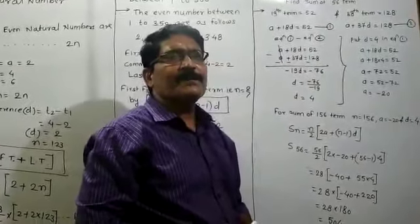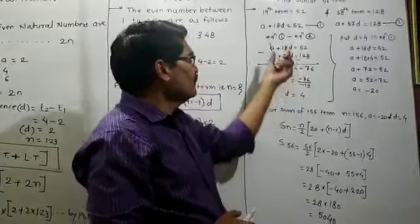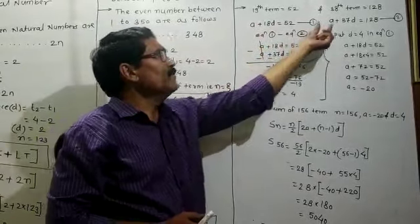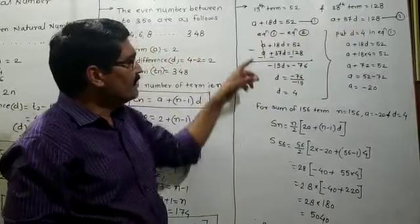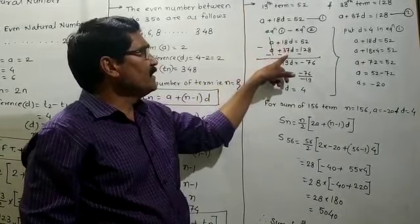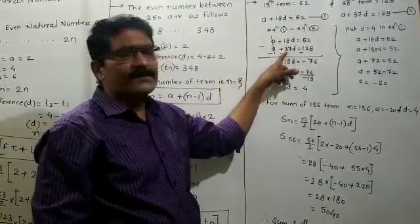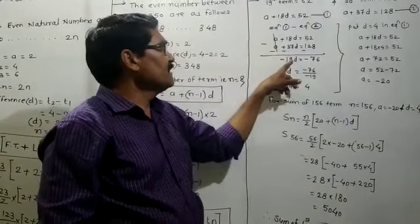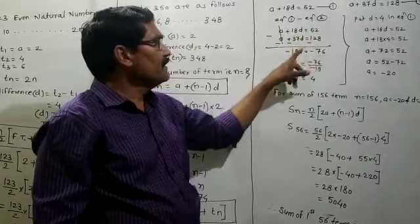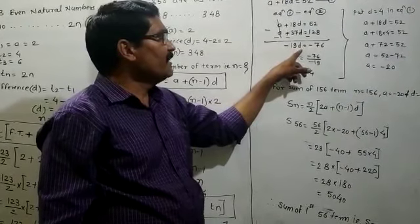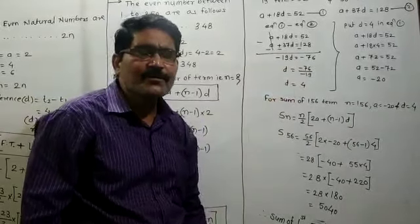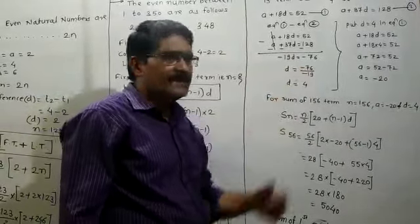Subtracting equation 1 from equation 2: A plus 18D equals 52, and A plus 37D equals 128. A minus A cancels. Then 18D minus 37D equals minus 19D, and 52 minus 128 equals minus 76. So minus 19D equals minus 76. Since both numbers are negative, the quotient is positive: D equals 76 divided by 19, which equals 4.